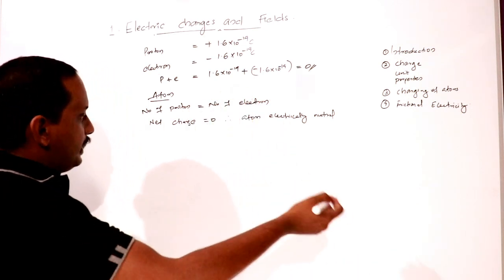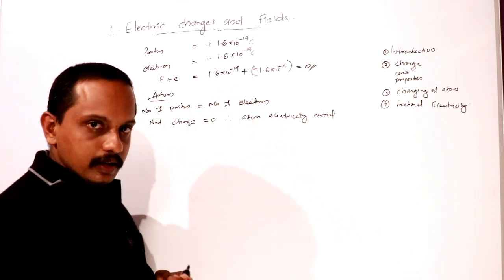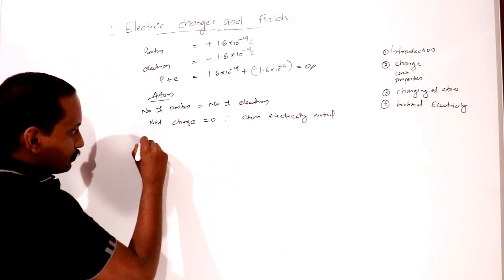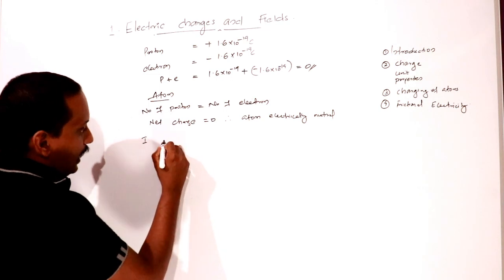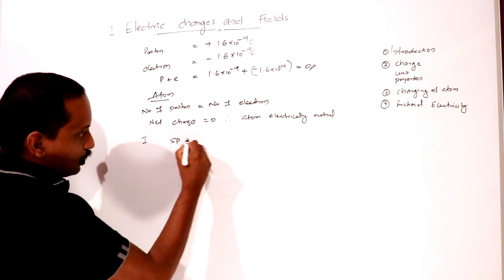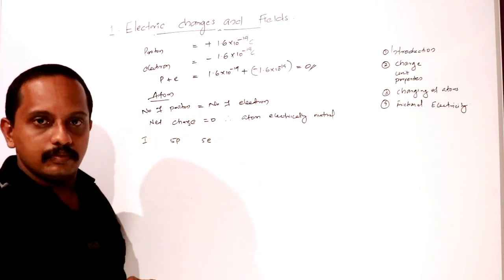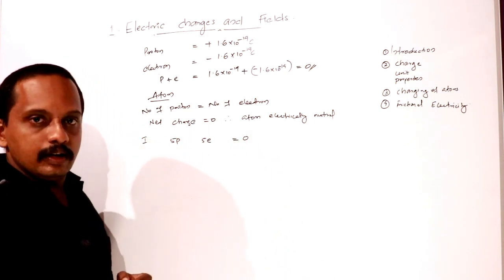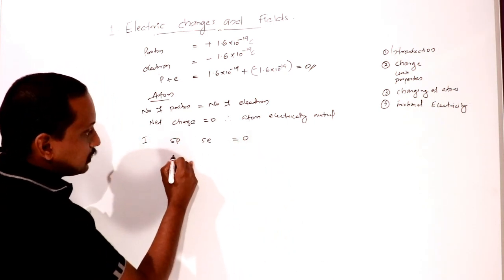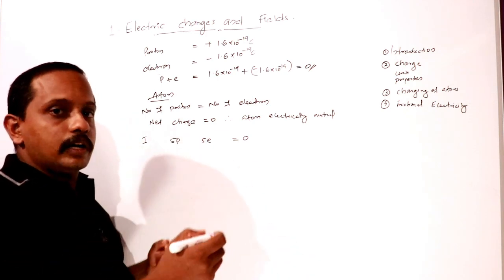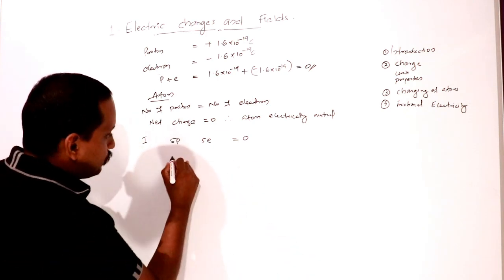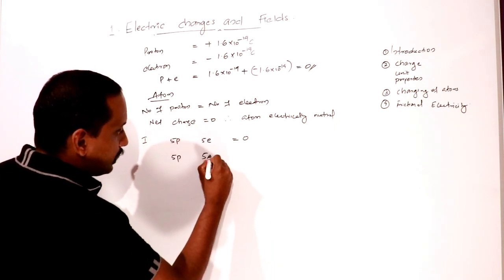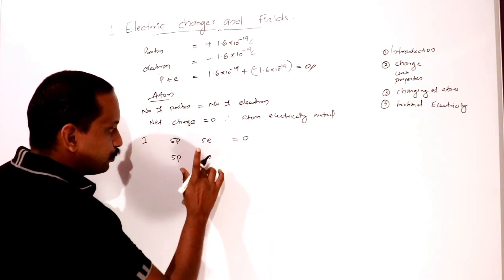For example, if an atom has 5 protons and 5 electrons, the atom is neutral — its net charge is zero. Now if one electron is removed, there are 5 protons and 4 electrons, and the atom becomes positively charged.